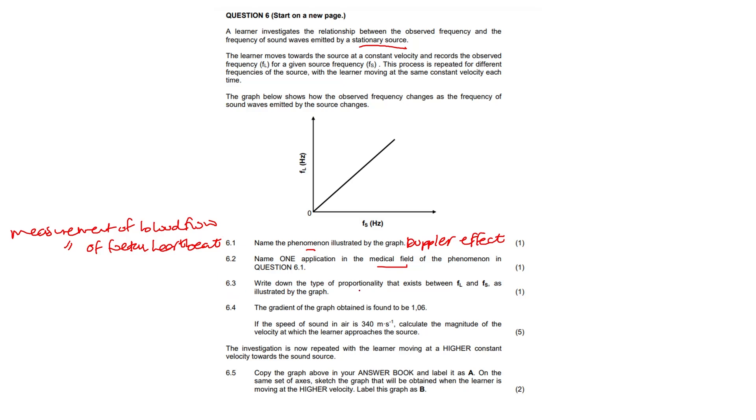6.3. Write down the type of proportionality that exists between the frequency observed by the listener and the frequency of a given source as illustrated by the graph. You can see that they are directly proportional. So I would write directly proportional, or you could say FL directly proportional to FS.